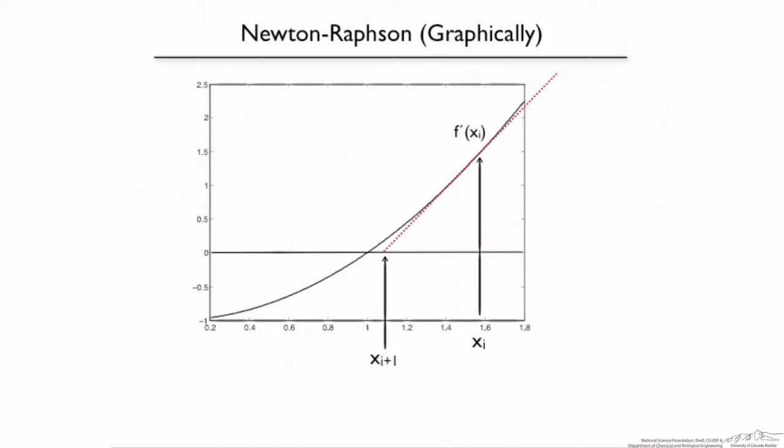So that's our new point, xi plus 1. Well, that's great if we have a graph, but what if we actually need to calculate it? So in that case, we can just use a little geometry. We know that the slope of this triangle is going to be the rise over the run. And so there, you know that f prime of x is just the rise, f of xi minus 0, divided by the run, xi minus xi plus 1.